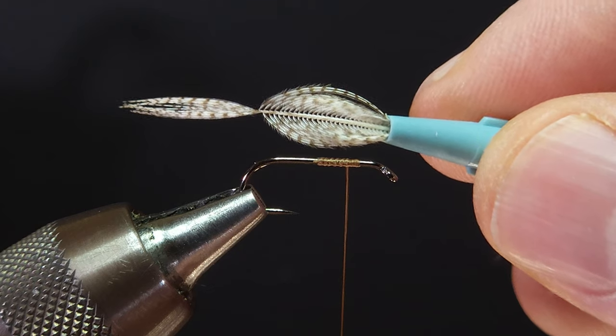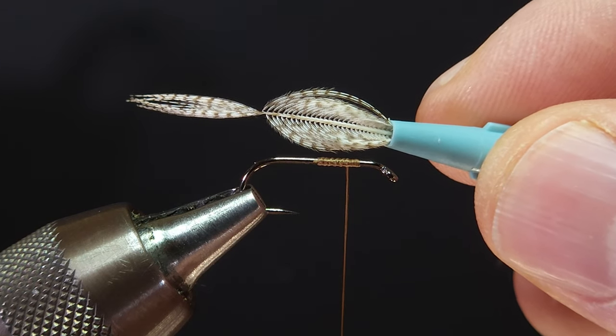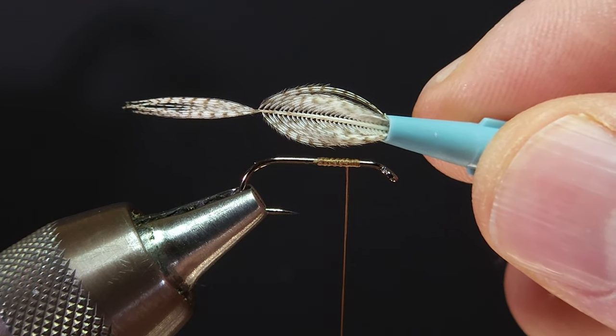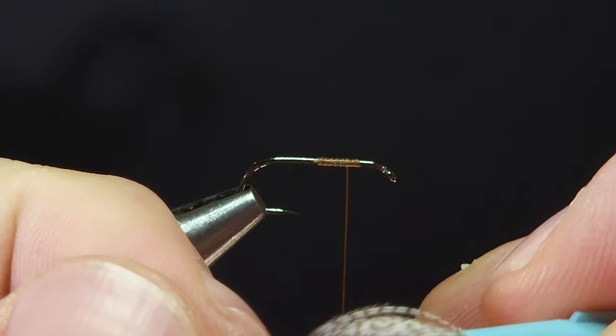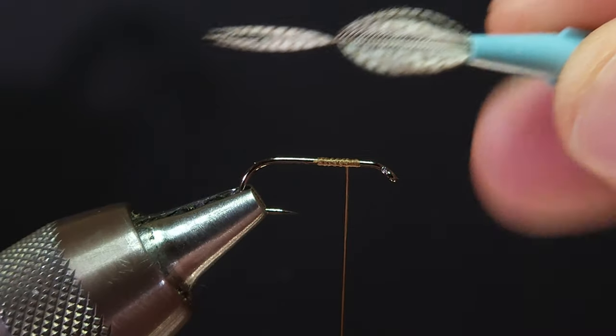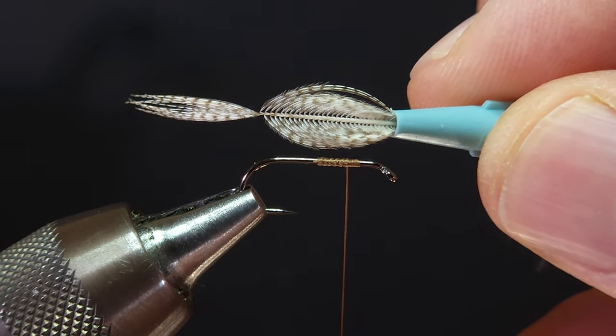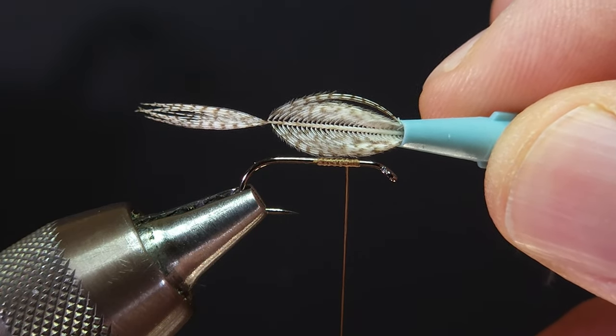I'm going to use the nozzle to maintain the shape that I want for this wing. So now with the assistance of the nozzle I can hold the material against the hook shank to size it. And I want these wings to be just about a hook shank length and height and that looks pretty good.